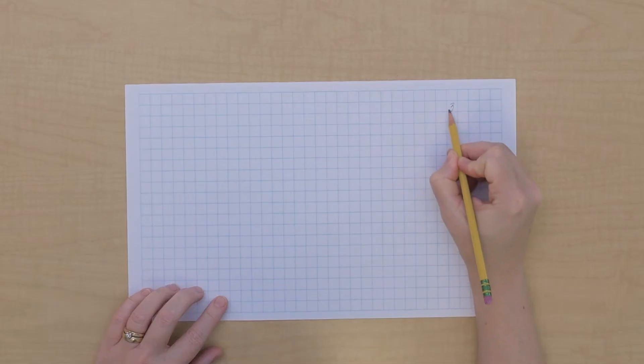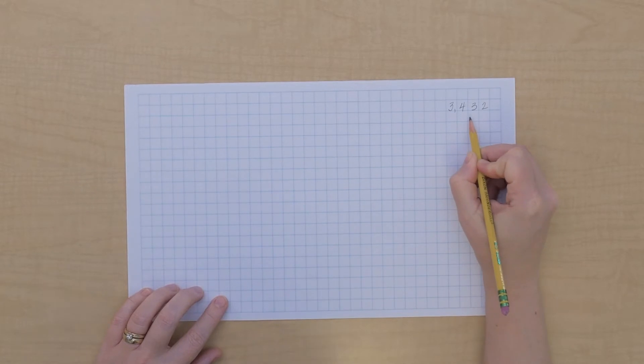Today I want to show you another way to do long multiplication. So this is how we're going to do it. We're going to take a problem. Let's do 3432 times 43.